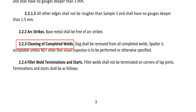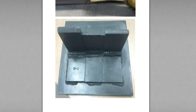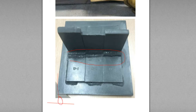Next one — section 2.2.4: Fillet weld termination and start. Fillet welds should not be terminated on corners of the lap joint. Terminations and starts should be as follows. So the fillet weld — a fillet weld is a T-joint, this kind of weld, is a fillet weld.